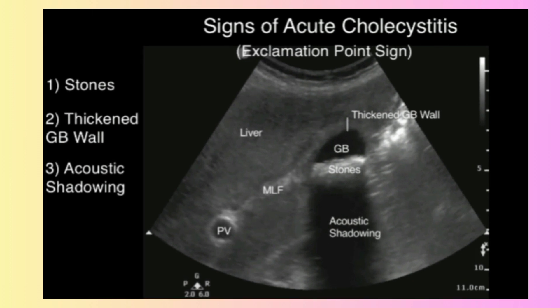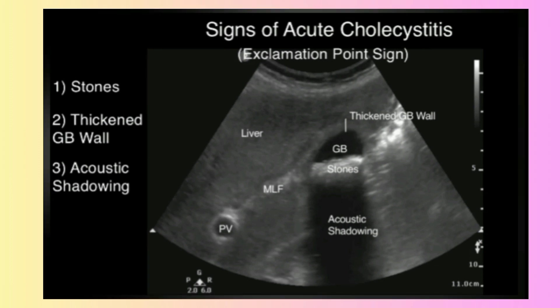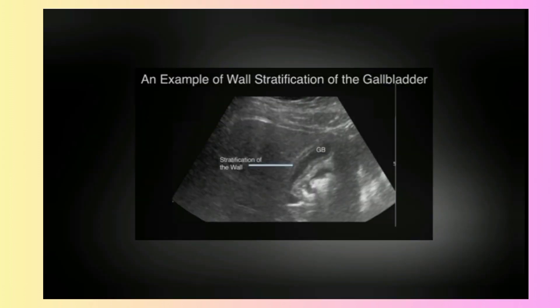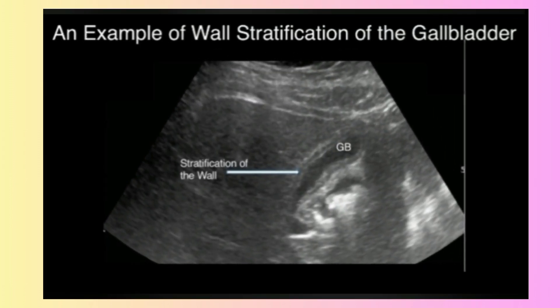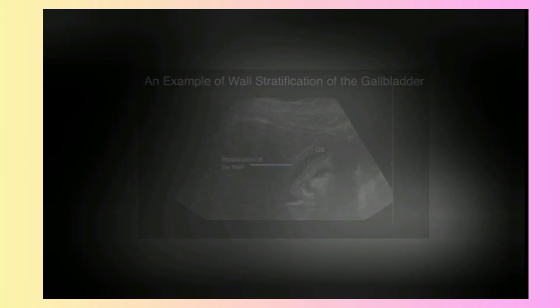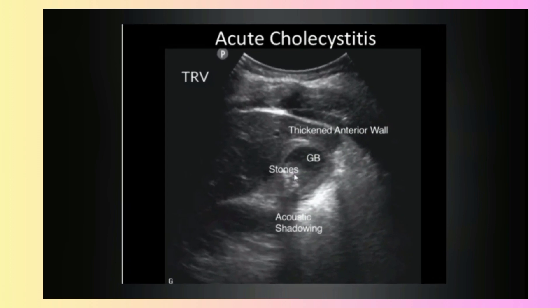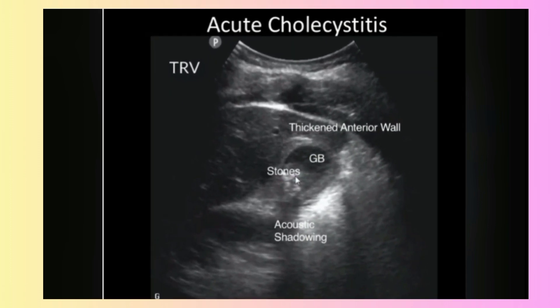Signs of acute cholecystitis. An example of wall stratification of the gallbladder. Acute cholecystitis.